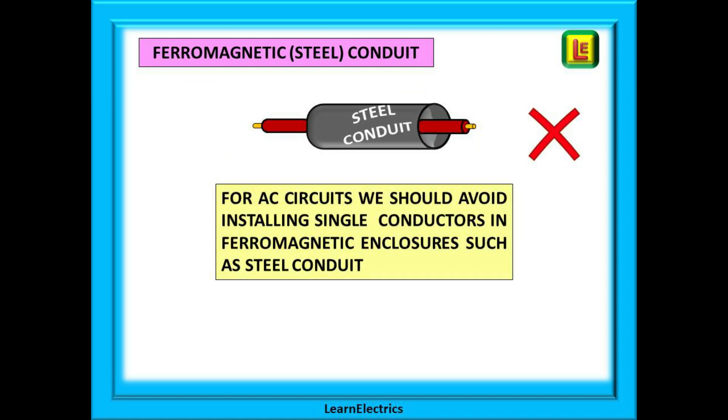The same principle must be applied to steel or ferromagnetic conduit or trunking systems. A single conductor on its own should not be installed in steel conduit for any AC circuit. Steel armoured single cables are considered to be ferrous enclosures in their own right and for the same reasons should not be used for AC circuits. Singles in armoured cable should use aluminium armouring as this is non-ferrous and does not generate eddy currents in AC circuits.